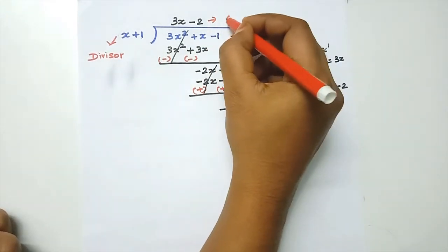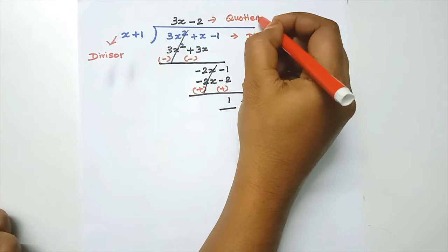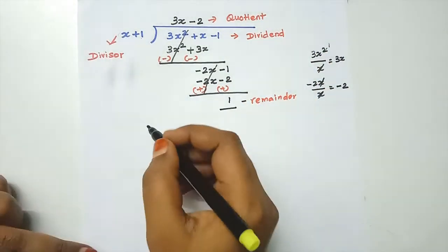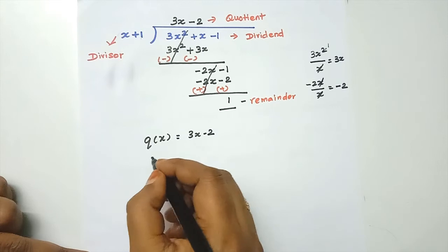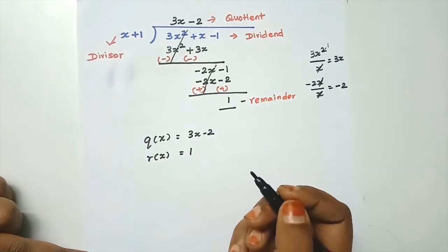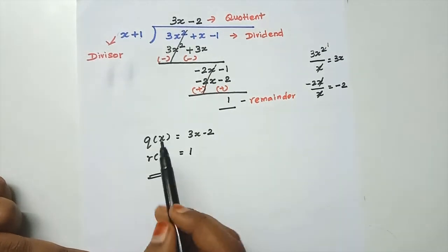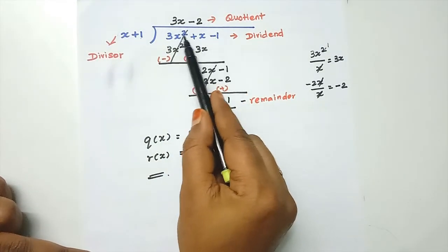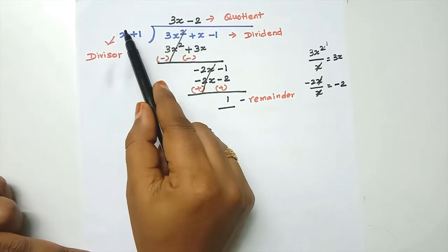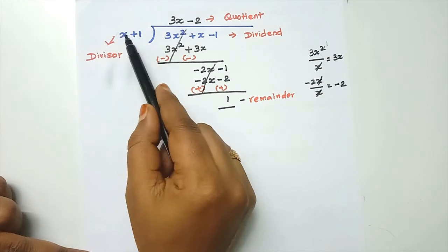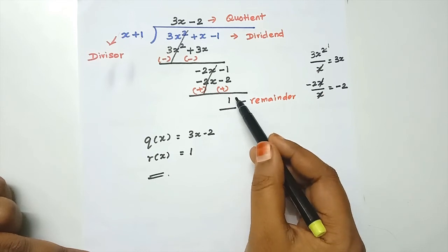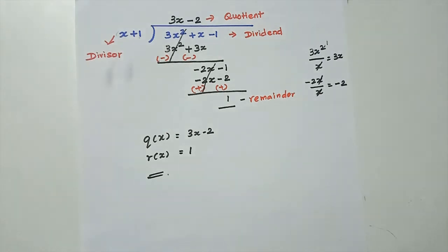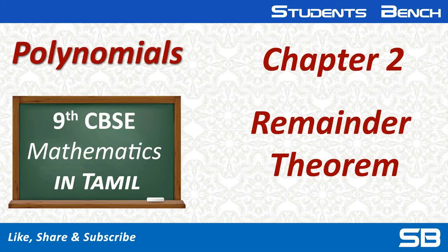This is the remainder. So q of x is 3x minus 2 and r of x is equal to 1. This is the answer. That is, the polynomial p of x divided by the linear polynomial gives remainder 1. Share and subscribe. Thank you.